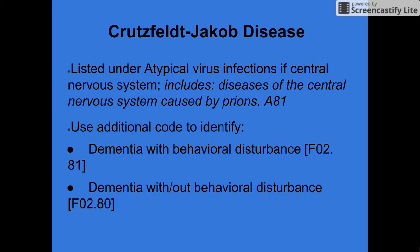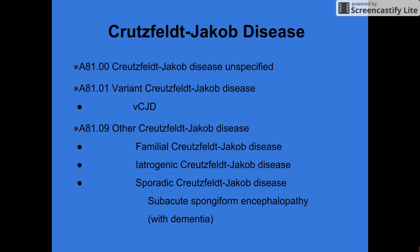For Creutzfeldt-Jakob disease, you will use the code A81, but you must also use an additional code to identify dementia with or without behavioral disturbance. For dementia with behavioral disturbance, use code F02.81, and for dementia without behavioral disturbance, use F02.80. The following slides have the different codings for Creutzfeldt-Jakob disease.